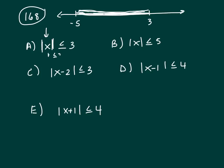So if x is between 3 and negative 3, that would be true. But that's not what's shaded on the number line. You've got from negative 5 down to 3.